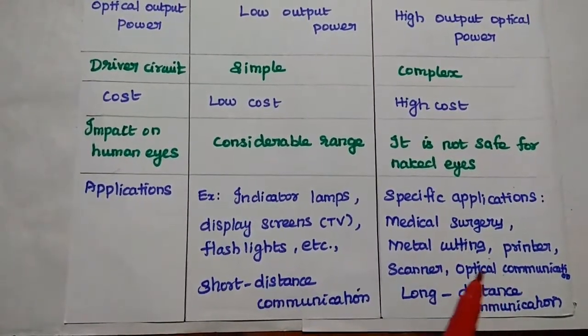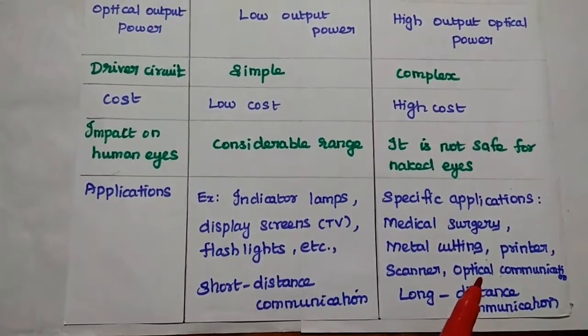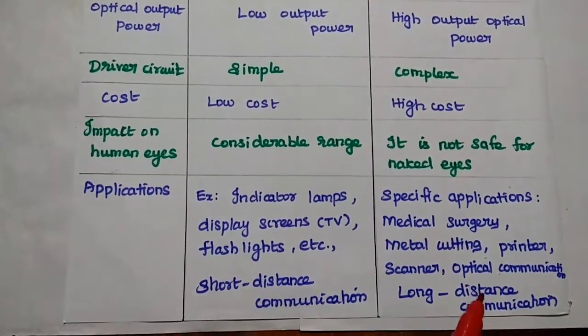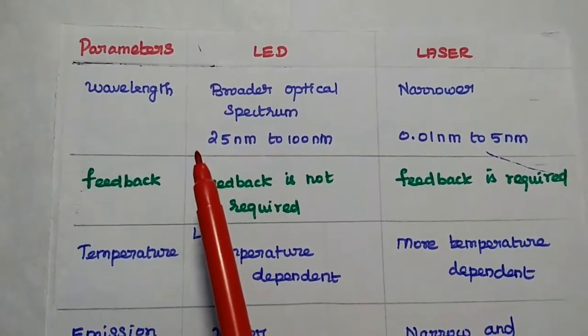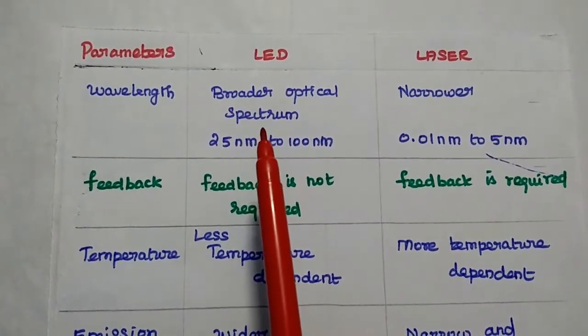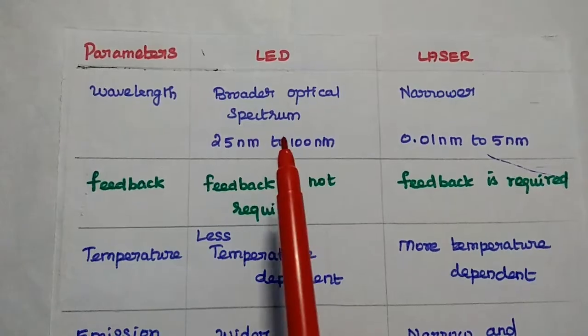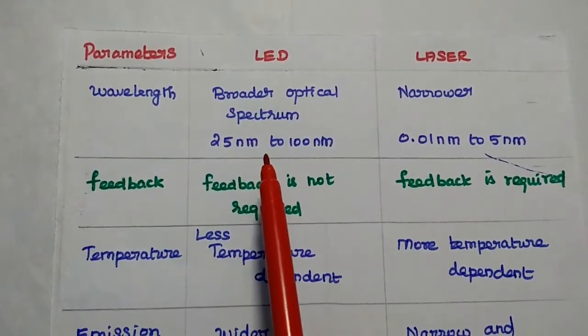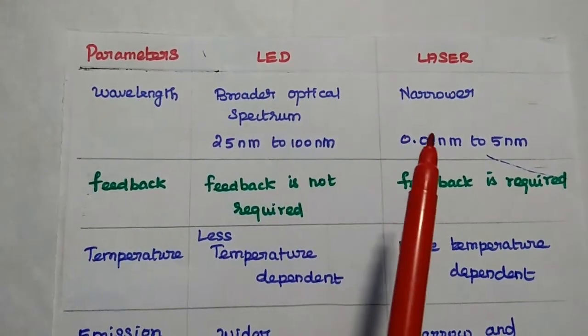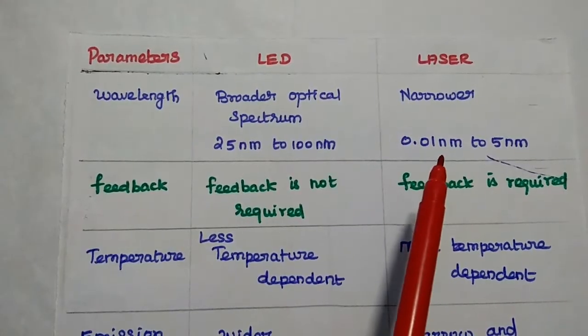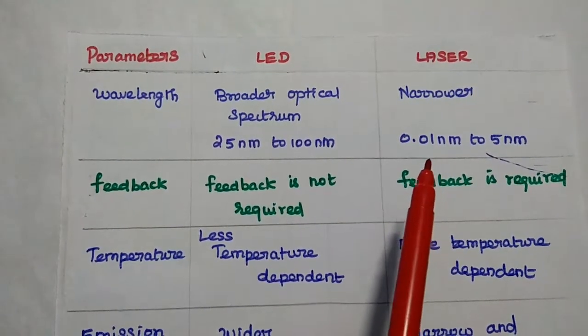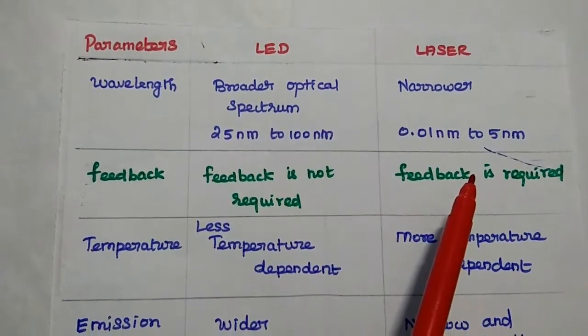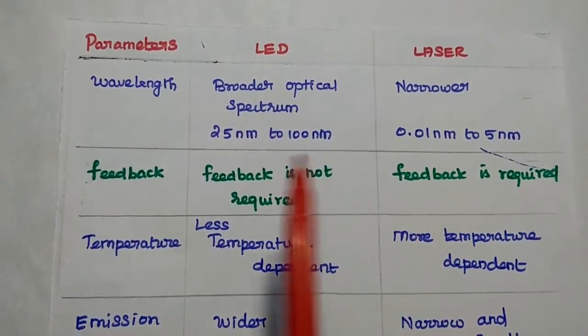Laser is used for specific applications like medical surgery, metal cutting, printer, scanner, optical communication, especially for long distance communication. Next, wavelength parameter. LED has broader optical spectrum, for example 25 nanometer to 100 nanometer. Laser has narrower spectrum, 0.01 nanometer to 5 nanometer. These are the example values.